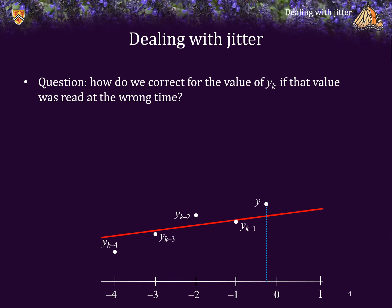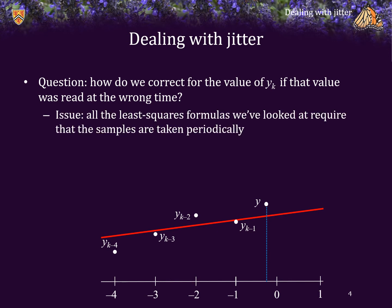After all, if the system is going up, or if y is increasing, had the reading of y occurred a split second later, on average, it would be slightly larger. The reason is because all of the formulas we've been looking at so far require that the samples be taken periodically.